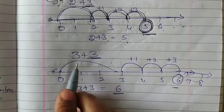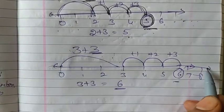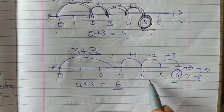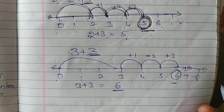Let's take another example. 3 plus 3. This is the number line. 0, 1, 2, 3, 4, 5, 6, 7, 8 up to so on.